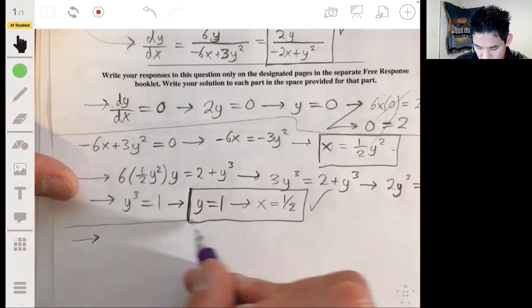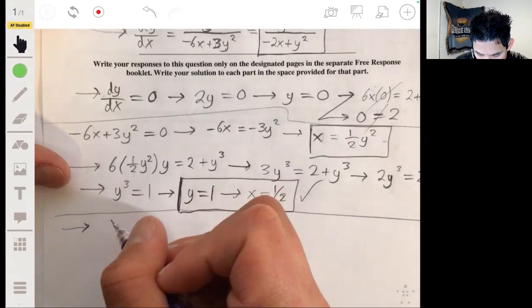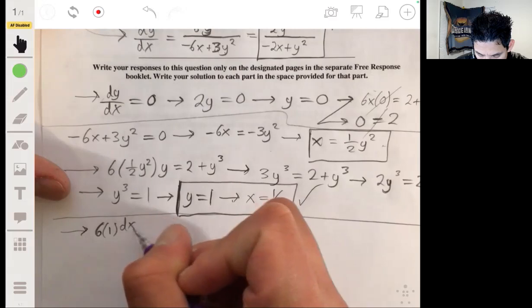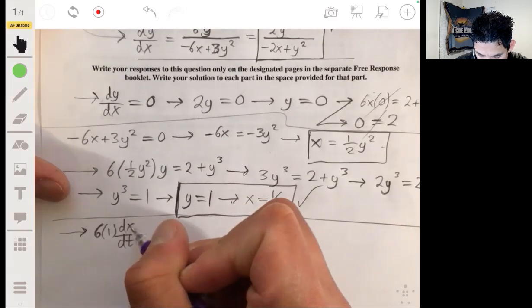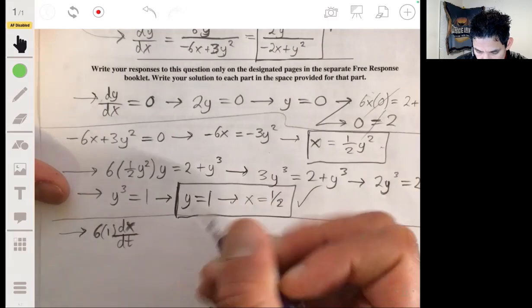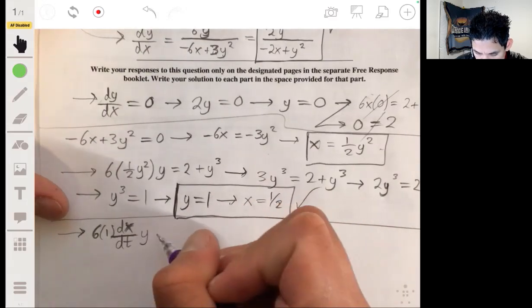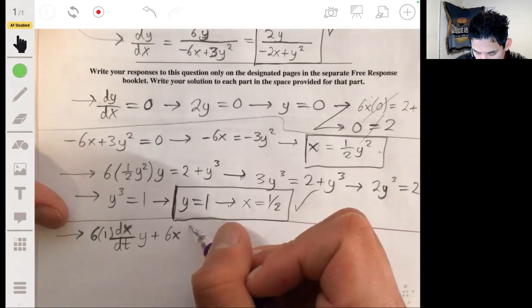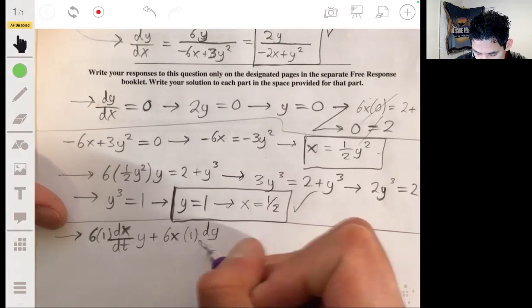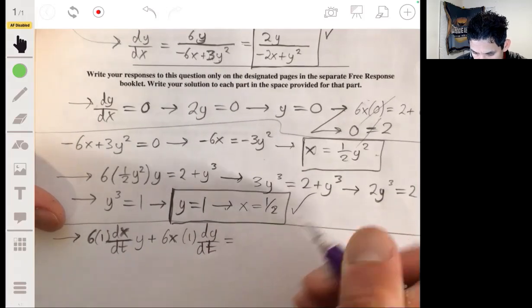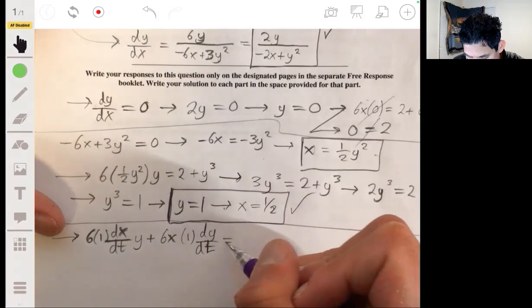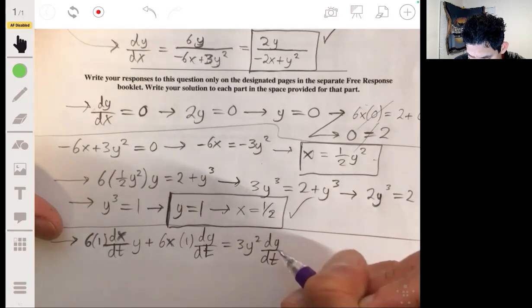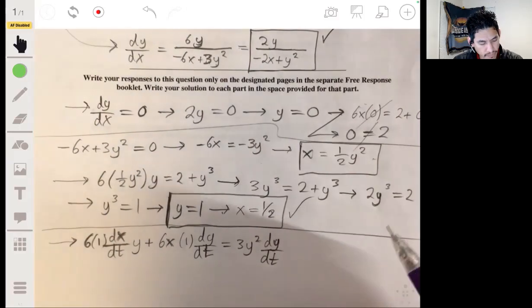So I'm going to do that down here. So using implicit differentiation and using product rule, we're going to have 6 times the derivative of x, but we're going to multiply by dx/dt because it's essentially applying the chain rule, times y, plus 6x times the derivative of y, which is 1, times dy/dt, is equal to the derivative of y cubed, which is 3y squared, times dy/dt.